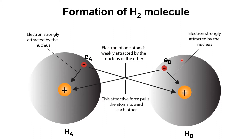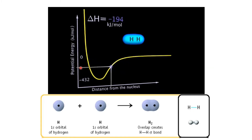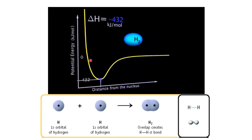Apart from the internal attraction, there is also a weak attraction between the electron of one atom and the nucleus of the other atom. When the atoms come closer, electron eₐ is attracted toward the nucleus of hydrogen B, and electron of atom B is attracted toward the nucleus of atom A. When the atoms are very close, there will also be repulsion between both nuclei.